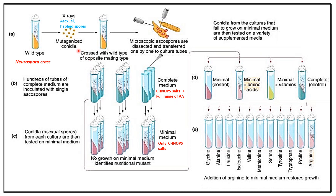Beadle and Tatum crossed the mutagenized conidia with wild type, non-mutagenized Neurospora. The diploid offspring then produced haploid ascospores. Those haploid ascospores were dissected and transferred one by one to culture tubes — hundreds of tubes of complete medium, each inoculated with a single ascospore containing CHOPS salts plus a variety of amino acids.